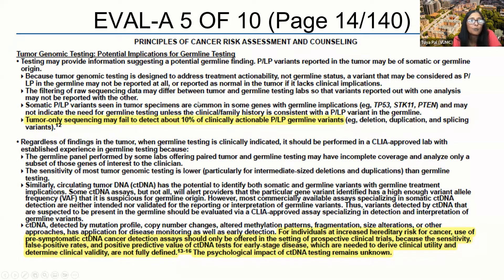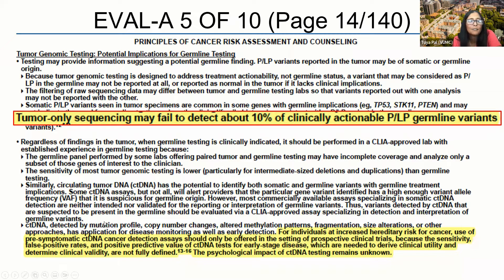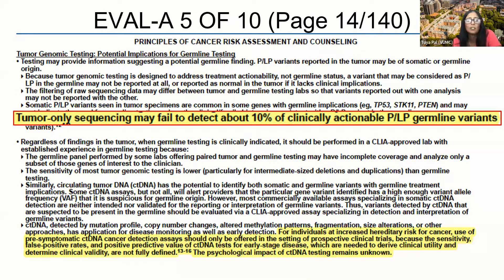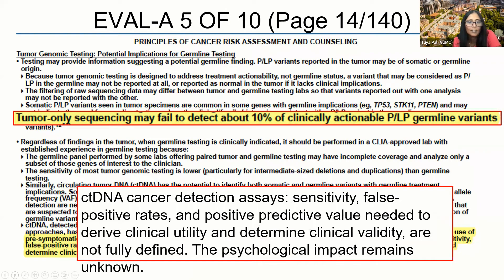Some of the salient points I wanted to mention — one area of confusion or inaccurate information in the oncology world is whether there is a need to do germline testing if nothing suspicious was found on tumor testing. The answer is yes. We clearly outlined this in the guidelines: tumor-only sequencing may fail to detect about 10% of clinically actionable pathogenic or likely pathogenic germline variants. The reason is that you're going to miss large rearrangements, deletions, duplications, et cetera. So if someone is at high risk, tumor-only sequencing is not enough.